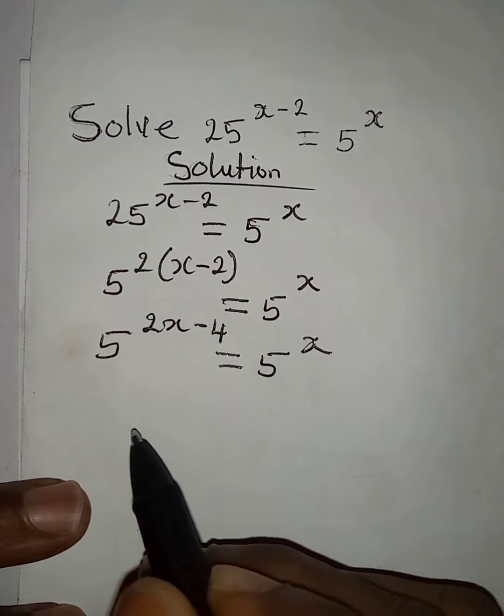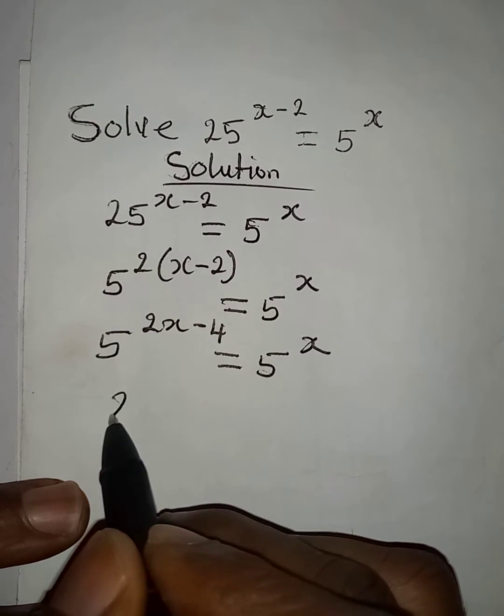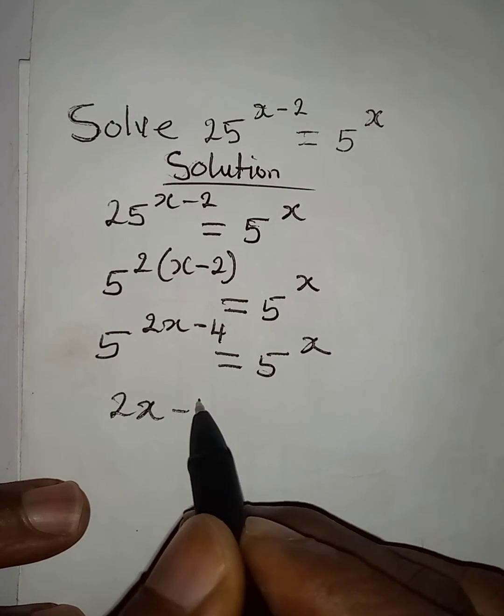Now that the bases are the same, we can work with the powers. 2x minus 4 will be equal to x.